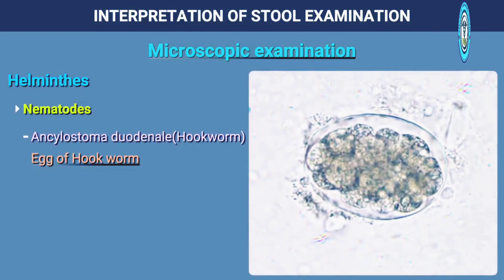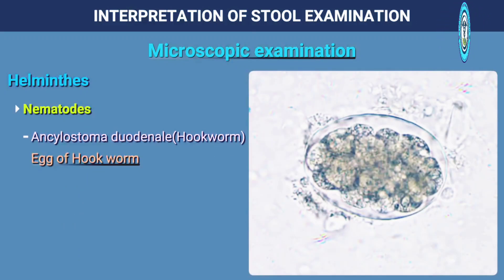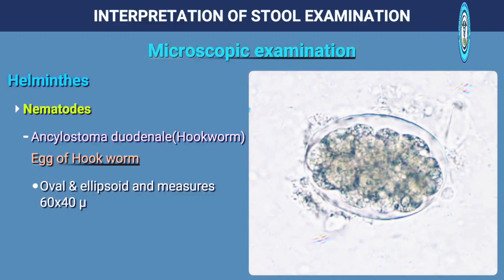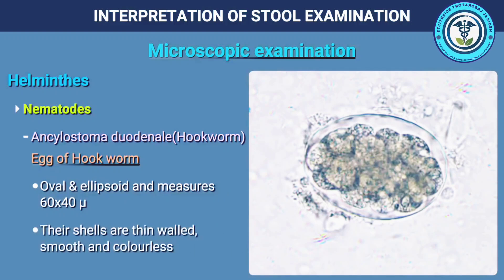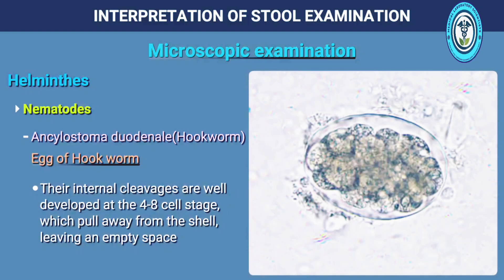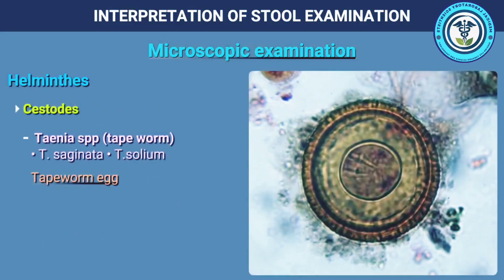Ancylostoma duodenale, or hookworm: the egg is oval and ellipsoid and measures 60 by 40 microns. The shells are thin-walled, smooth and colourless. Their internal cleavages are well developed at the 4 to 8 cell stage.